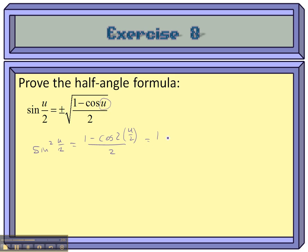That's 1 minus, whenever you multiply this 2 and this 2, they cancel out, leaving us with cosine of u all over 2. Now I deal with this squared by taking the square root of both sides, and I'll have sine of u over 2 equals plus or minus the square root of 1 minus cosine u all over 2.